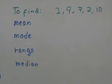Mode is the number or value that occurs most often in the data set.